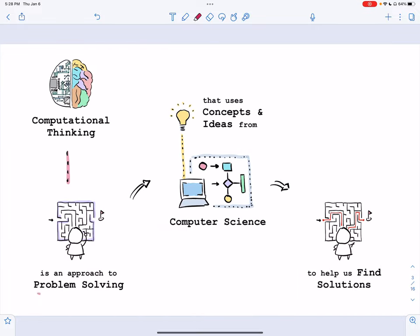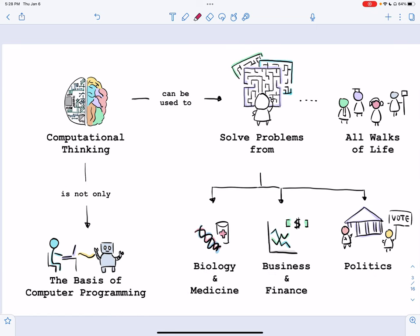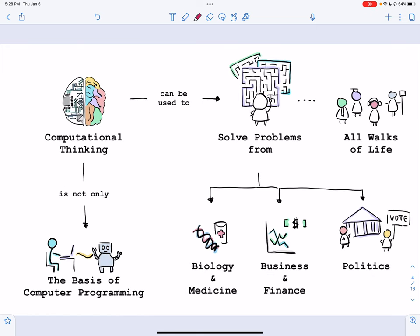Computational thinking is an approach to problem solving that uses concepts and ideas from computer science in order to help us find solutions to a variety of life's problems. Computational thinking is not only the basis of computer programming, it can also be used to solve problems from all walks of life.